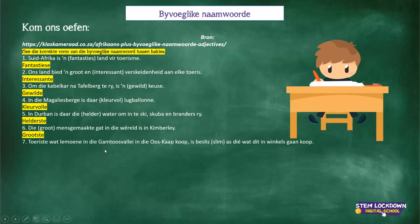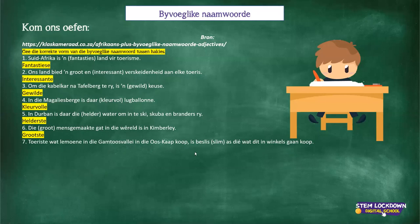'Toeriste wat lemoene in die Gamtoos-vallei in die Ooskaap koop, is beslis slimmer as dié wat in die winkels gaan koop.' Ends on a short vowel followed by a consonant — what's going to happen there? 'Slimmer.' Thank you, Boost.